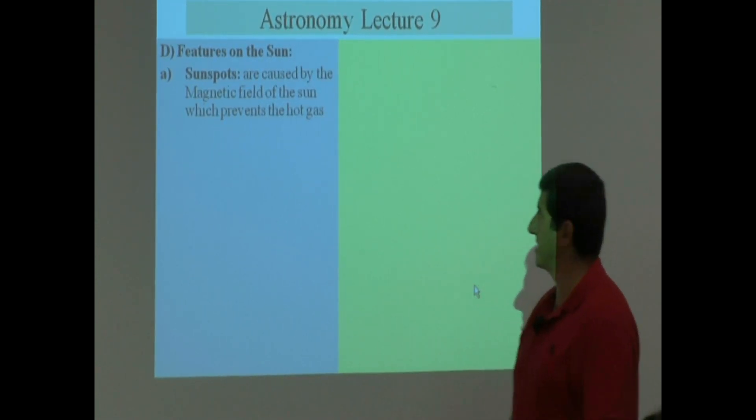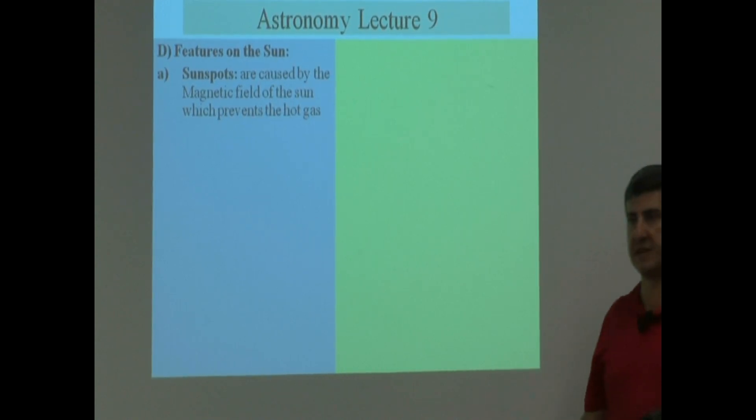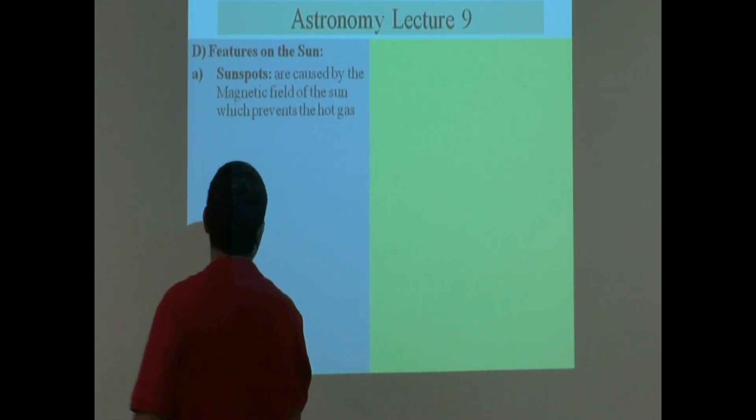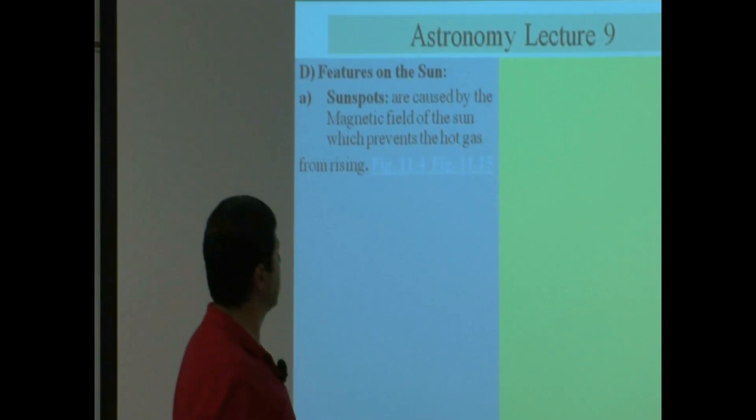Features on the sun: sunspots. This is by far the most prominent, most famous feature on the sun. These are caused by the magnetic field of the sun, which prevents the hot gas from rising.